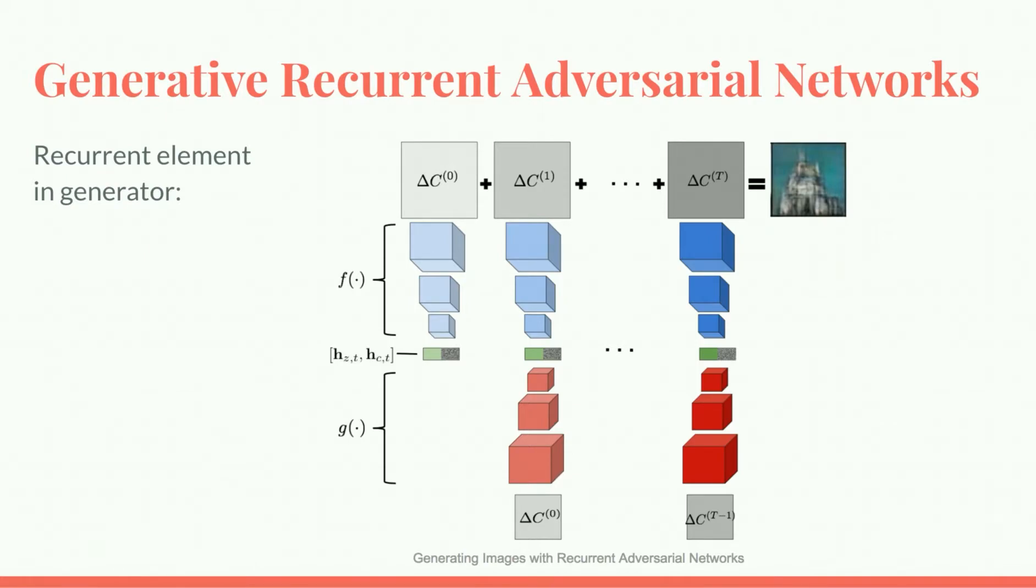At each step, a hidden state, H, is computed by running an encoder, G, on the previous step's output and concatenating the result with a function of the prior distribution. The hidden state is run through a decoder, F, to get an intermediate result denoted by delta C. At the end, all the intermediate steps are combined to get one final output.